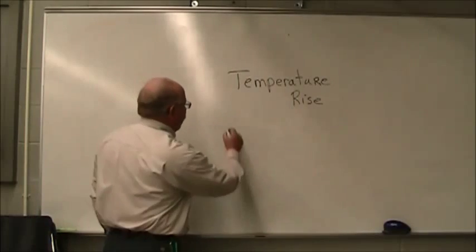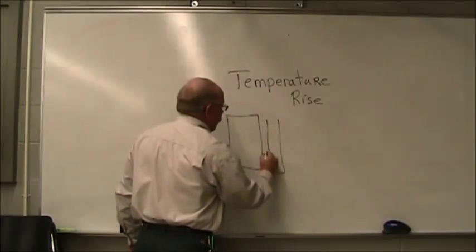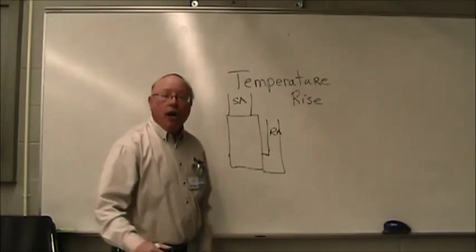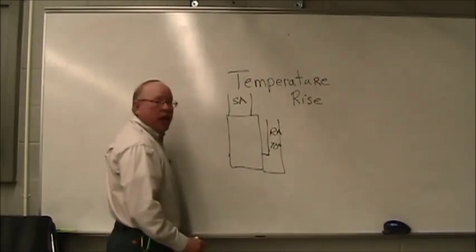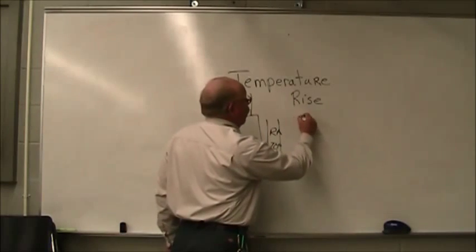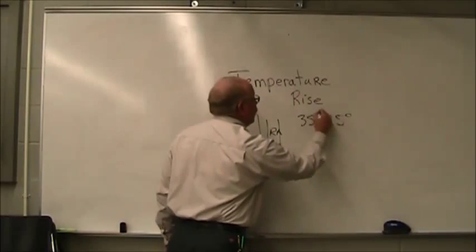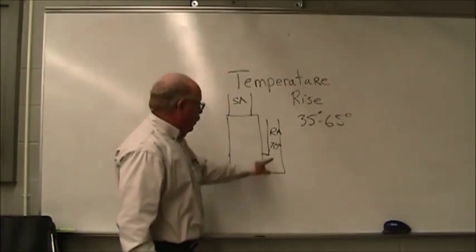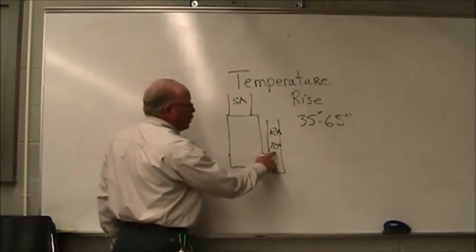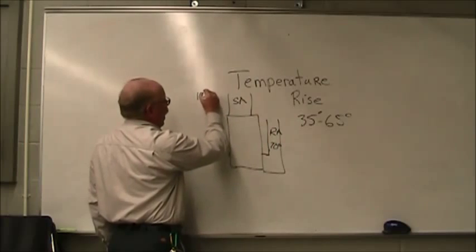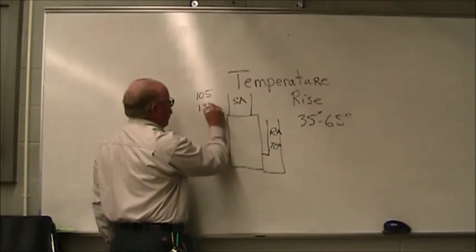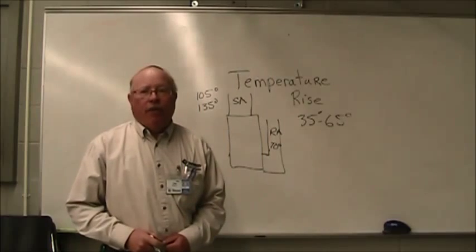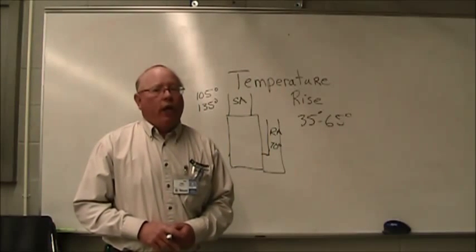So, let's say that we have a furnace here. Here's our return air — we'll call that RA — and our supply air, SA. If the return air is coming in at 70 degrees, and we have a temperature rise on our data plate of 35 to 65 degrees, then that means the air exiting out, if it's in the proper amount, should have a temperature of approximately 105 to 135 degrees Fahrenheit. If the temperature rise is too high, we're not getting enough air. If the temperature rise is too low, we're getting too much air.